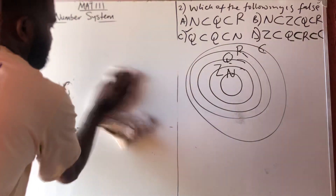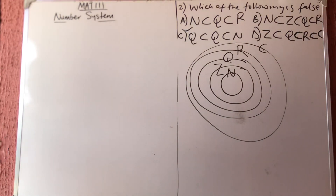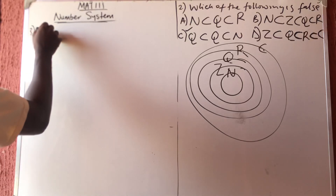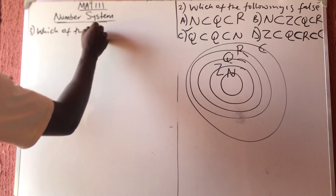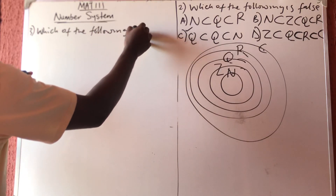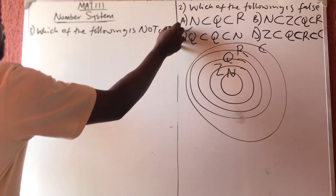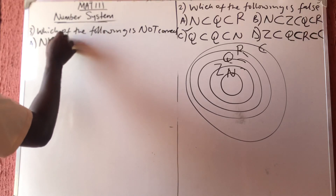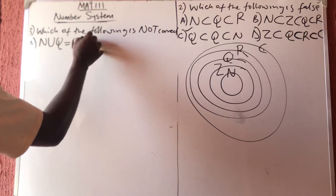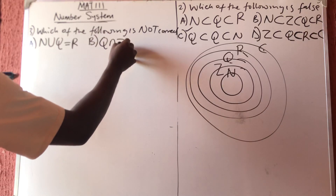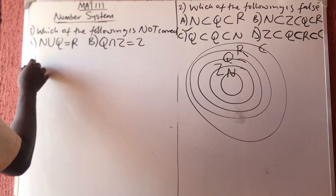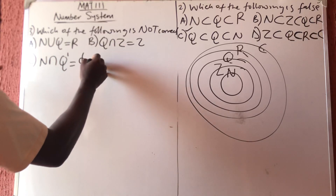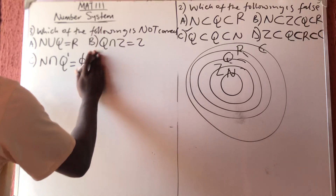Question number three asks: which of the following is NOT correct? Option A says N union Q equals R. Option B says Q intersection Z equals Z. Option C says N intersection Q prime equals an empty set. Option D says N union Z equals Z.